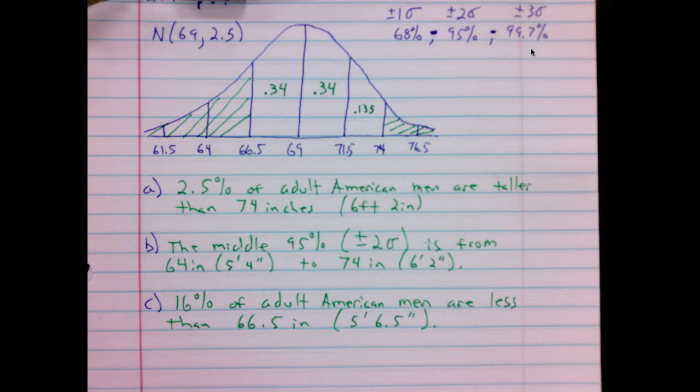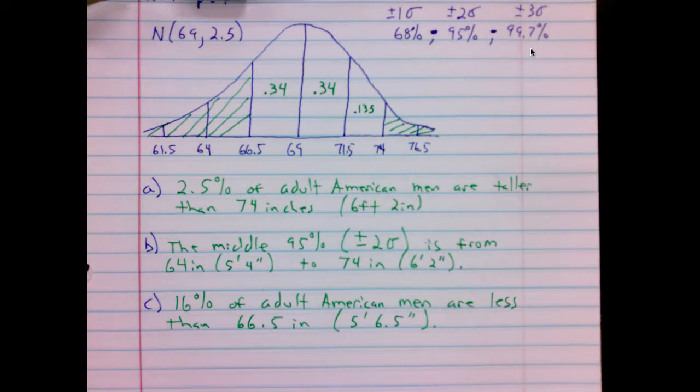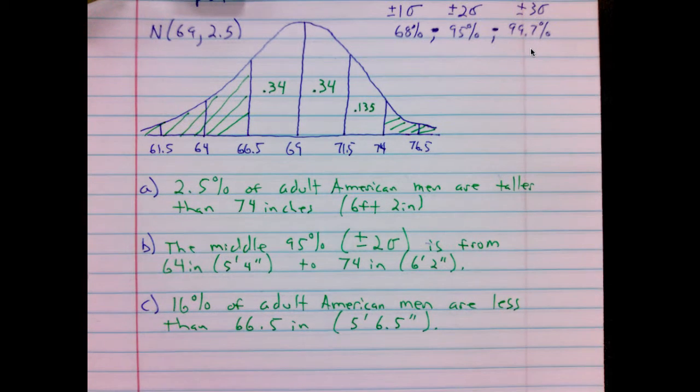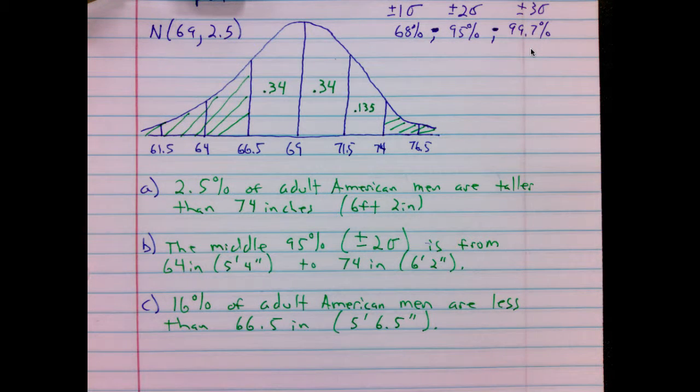Final question, D: A height of 71.5 inches corresponds to what percentile of adult American men? Well, let us remind ourselves of the definition of percentile. Percentile is the value below which a given percent of observations fall at or below.